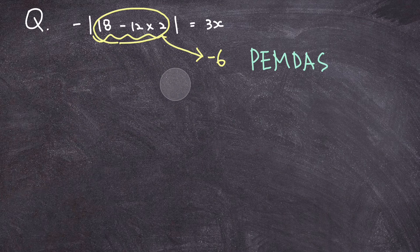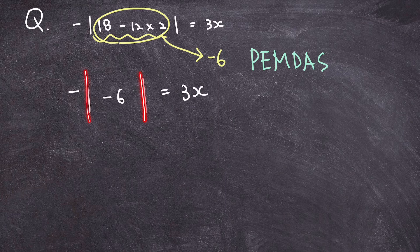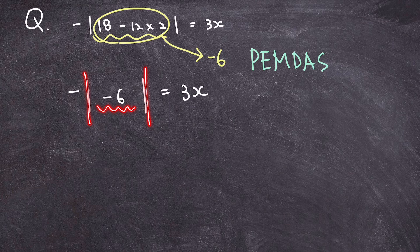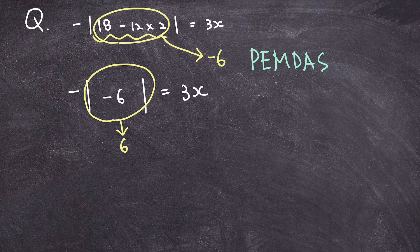I'm just going to replace these numbers with negative 6, and rewrite the whole expression. Now, the absolute value, by definition, means whatever number you have within the absolute value, it's going to lose its sign. So, negative 6 here is going to become just 6 with the absolute value sign. So, that means I can replace this expression with 6, right? Because absolute value of negative 6 is equal to 6.